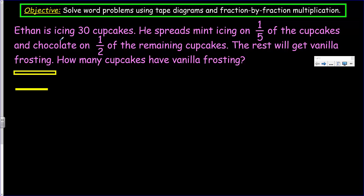So let's go ahead and get started here. Ethan is icing 30 cupcakes. Alrighty. He spreads mint icing on one fifth of the cupcakes and chocolate on one half of the remaining cupcakes. The rest will get vanilla. And how many cupcakes have vanilla frosting?